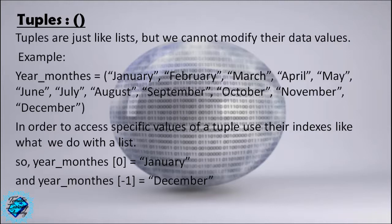For example, year_months is a tuple containing January, February, March, April, May, June, July, August, September, October, November, December. In order to access a specific value of a tuple, use their indexes like what we do with lists. So year_months[0] equals January, and year_months[-1] equals December.